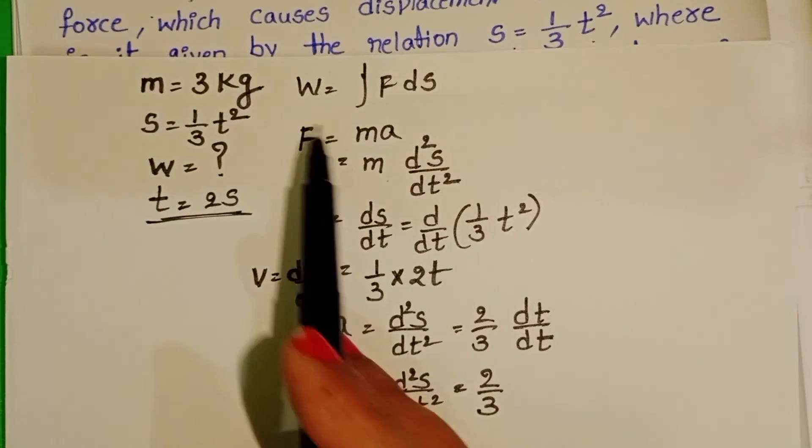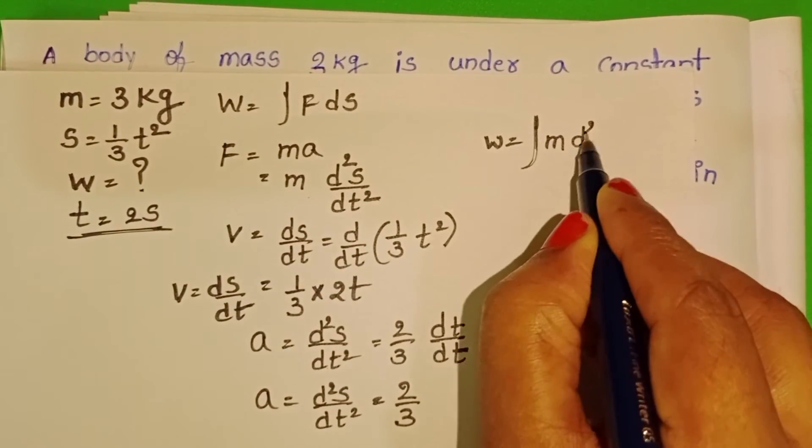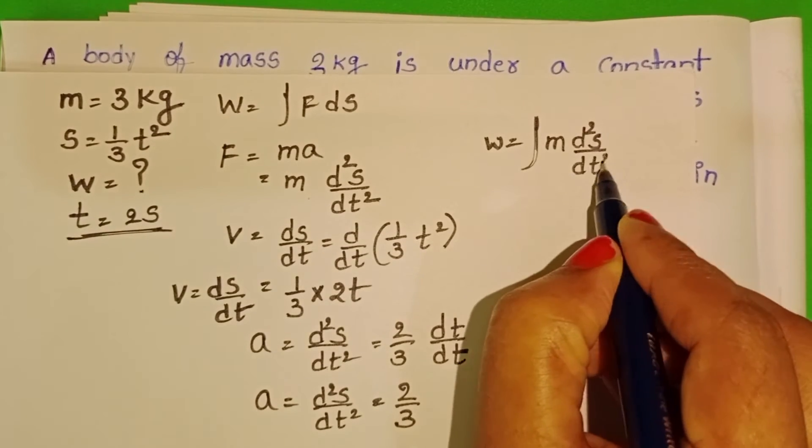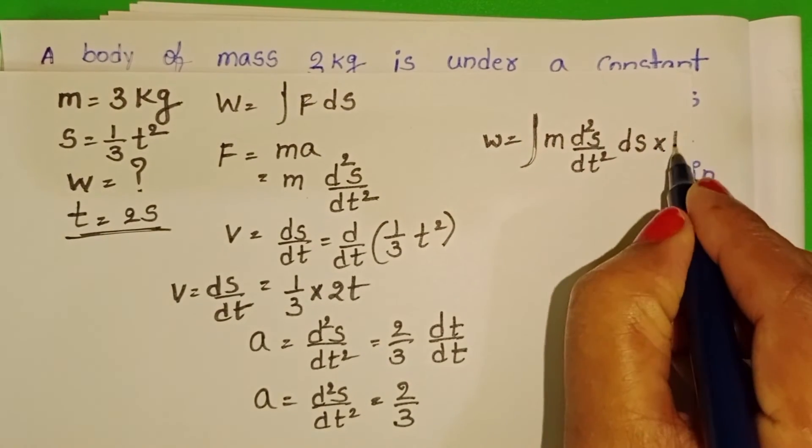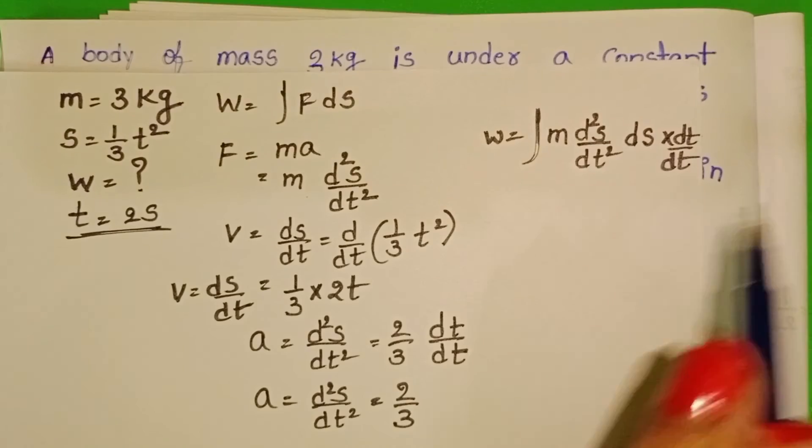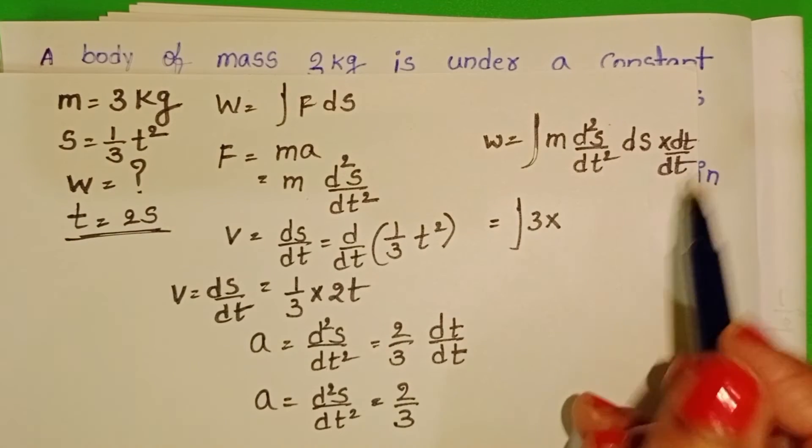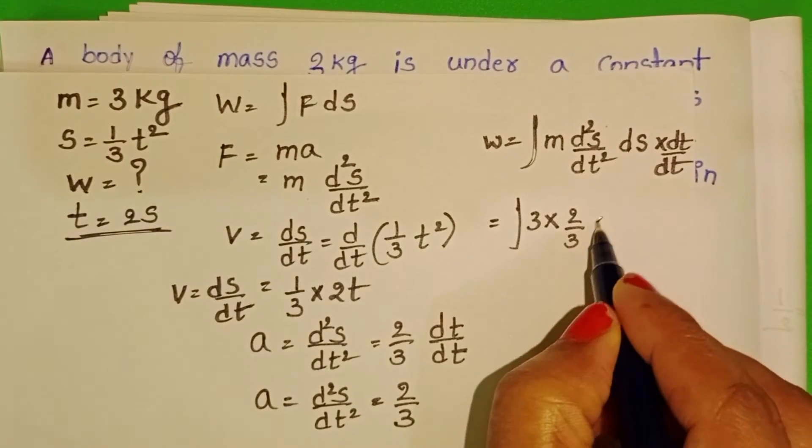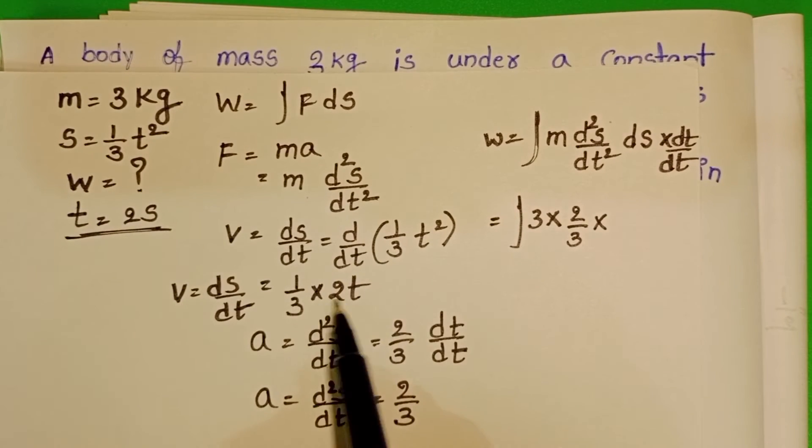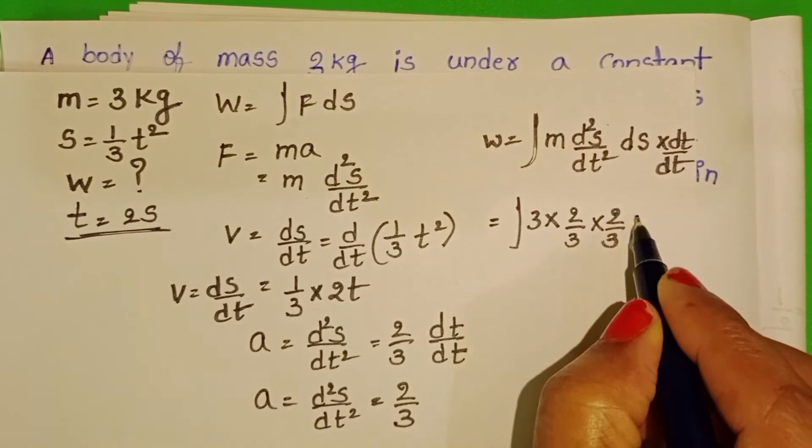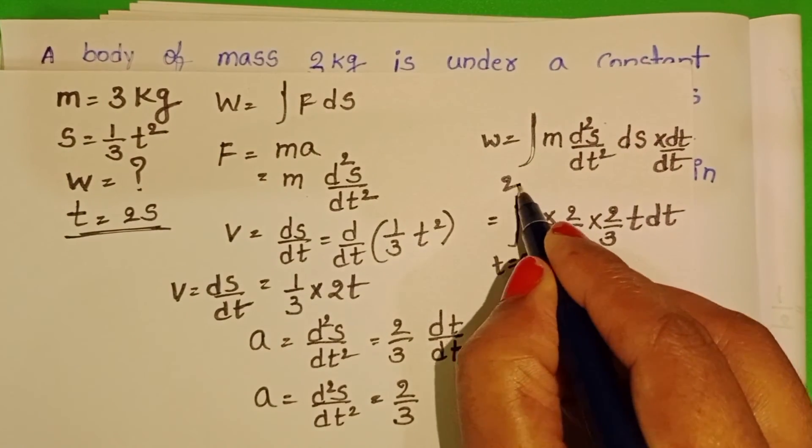Now substitute the values in the formula. Work done equals mass into acceleration, d square S by dt square, into dS. But here S is a function of time, so multiply and divide with dt. In place of mass, 3 kg; d square S by dt square, 2 by 3. We know dS by dt is velocity, which equals 2 by 3 into T. So work done is the integral of 3 times 2 by 3 times 2 by 3 T dt, with limits from T equals 0 to 2 seconds.